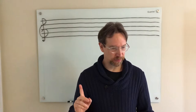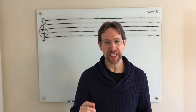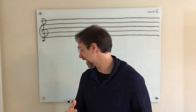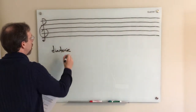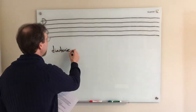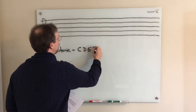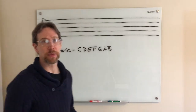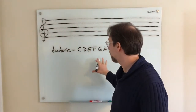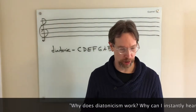Question number one is from Michael. He asks: why does diatonicism work? Diatonic, just as review, refers to the notes that are within a specific scale. So for instance, a C major scale — C, D, E, F, G, A, B — if a piece of music only uses the notes of that major scale, it is called diatonic. So why does diatonicism work is the question.